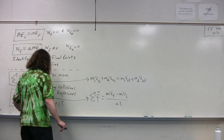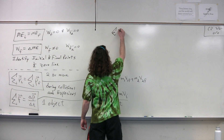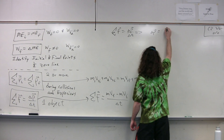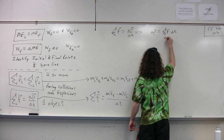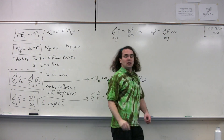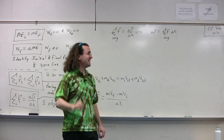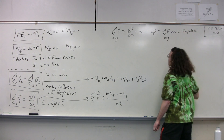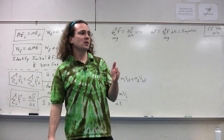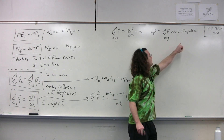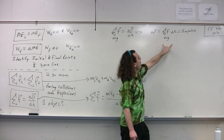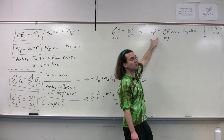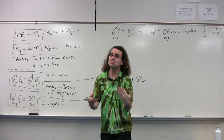Looking at net force equals change in momentum over change in time, we rearranged this to get: change in momentum equals the average net force times the change in time. This is called impulse. Impulse equals two different things: it equals the change in momentum of the object, and it also equals the average net force on the object multiplied by the change in time. Sometimes you'll use one piece, sometimes the other, and sometimes both.